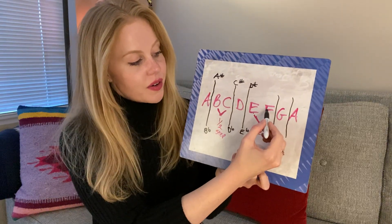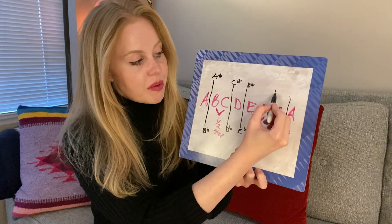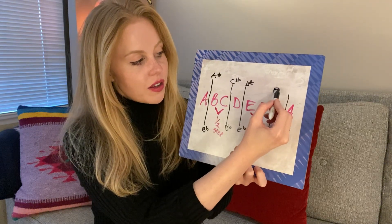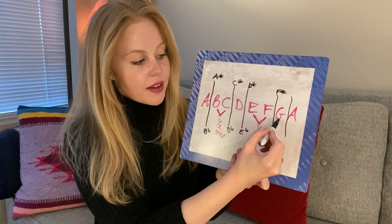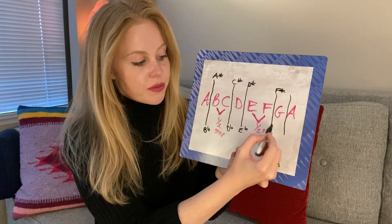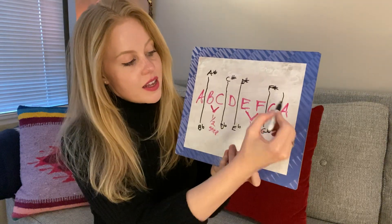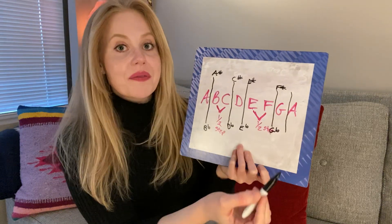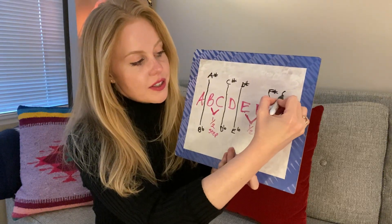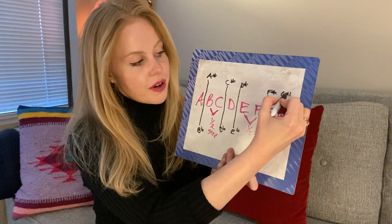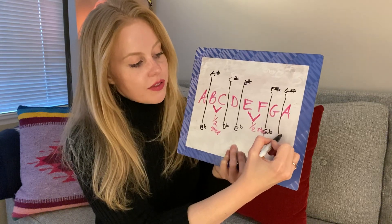Let's go to F. I can raise F a half step by playing this black key, called an F sharp. I can also go back a half step from G and call this a G flat. One more: we can raise G a half step and call this a G sharp, or I can lower A a half step and make it an A flat.